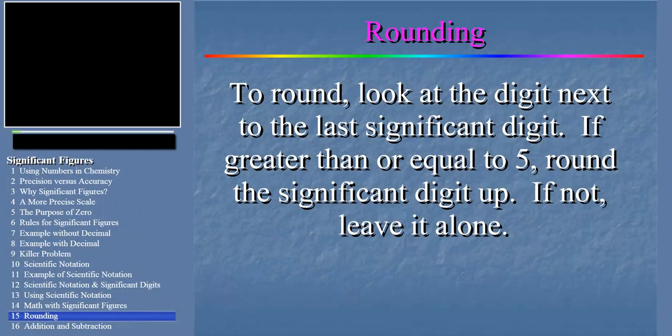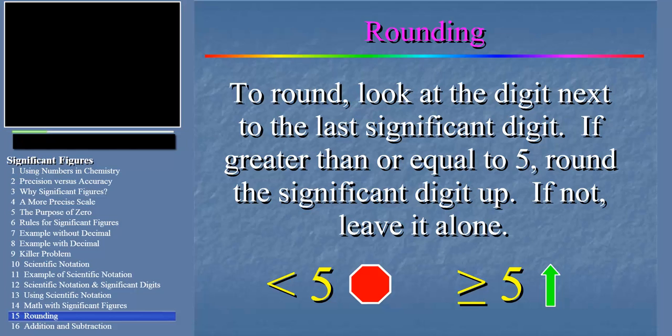Look at the digit next to the last significant digit. If that number is greater than or equal to 5, then round the significant digit up. If not, then leave the significant digit alone. As usual these instructions don't make much sense till we see an example, so let's look at our previous answer.